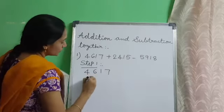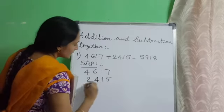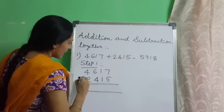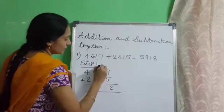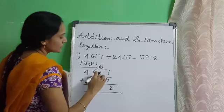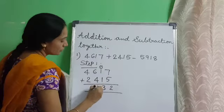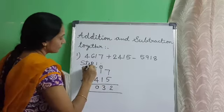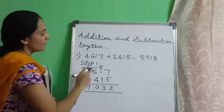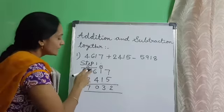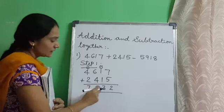Add the first two numbers: 4617 and 2415. 7 plus 5 is 12, 1 is carryover. 1 plus 1 is 2, 2 plus 1 is 3. 6 plus 4 is 10, 1 plus 5 plus 2 is 7. By adding these two numbers, we get the answer 7032.